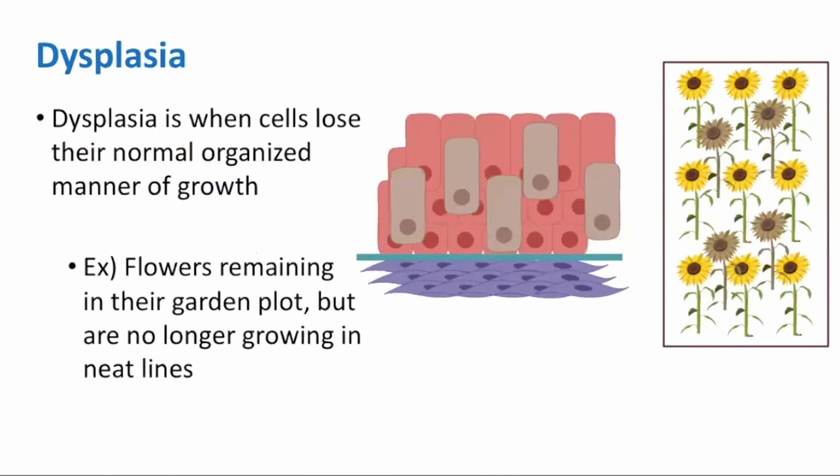Dysplasia is the first step in this process, when cells lose their normal organized manner of growth. You can think of this as our flowers, or epithelial cells, remaining in their garden plot, but no longer growing in neat lines or layers.